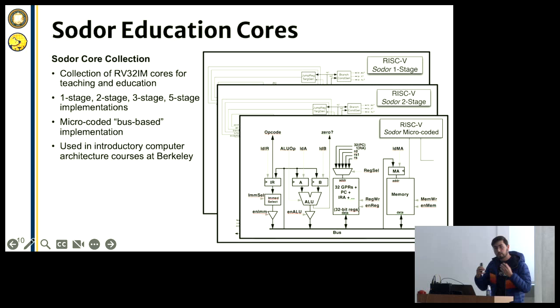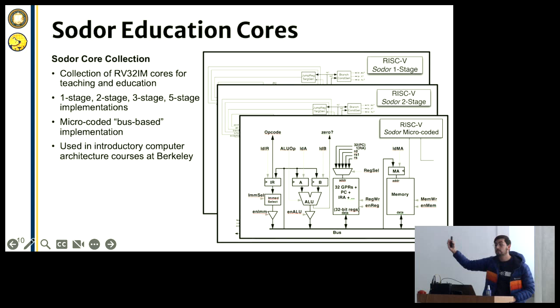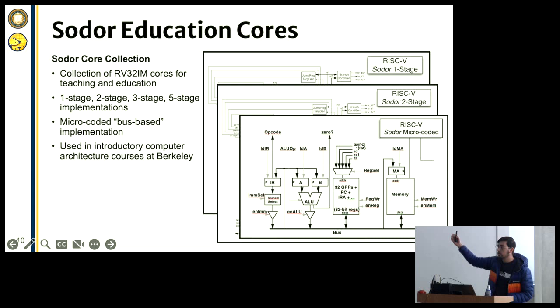There's more IP here. From the educational perspective, it can be hard to dive into a beefy in-order or out-of-order core and learn all the ins and outs. So we have a bunch of other cores integrated into ChipYard for education purposes, ranging from one-stage processors all the way to five-stage implementations. This is what we use inside of classes — it's great for getting started with what is a processor, what is a register, and how to connect all these components together.